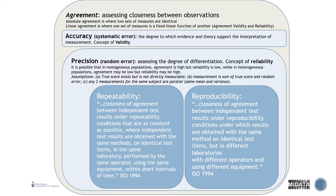Here is a busy slide, but it gives you an overview of everything we're going to talk about in this lecture and the next. Agreement is the overarching concept — assessing closeness between observations. There are two types of agreement: absolute agreement, when two sets of measures are identical, and linear agreement, when one set of measures is a fixed linear function of another.